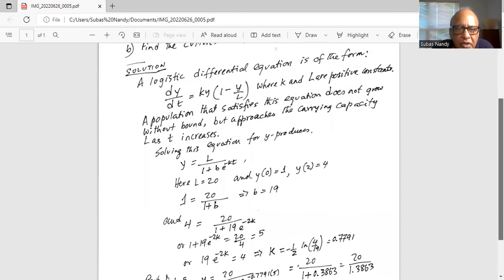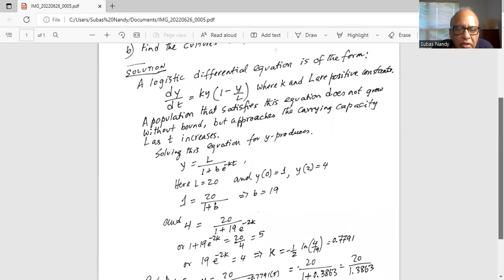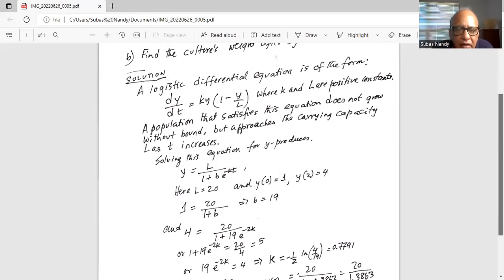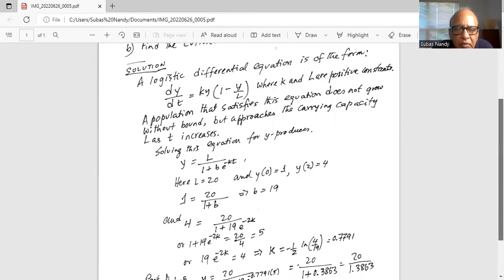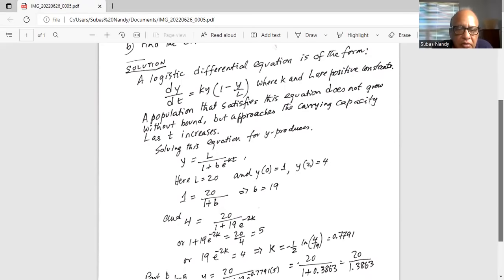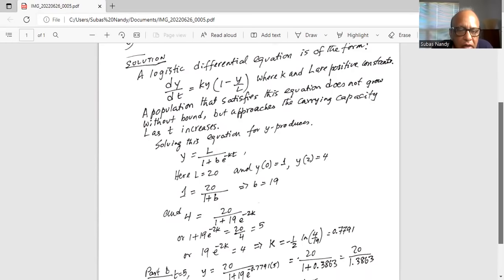And then we substitute for t equals 2, y equals 4. We get 4 equals 20 divided by 1 plus 19 times e to the power of minus 2k. This gives us 1 plus 19e to the minus 2k equals 20 over 4, which is 5.